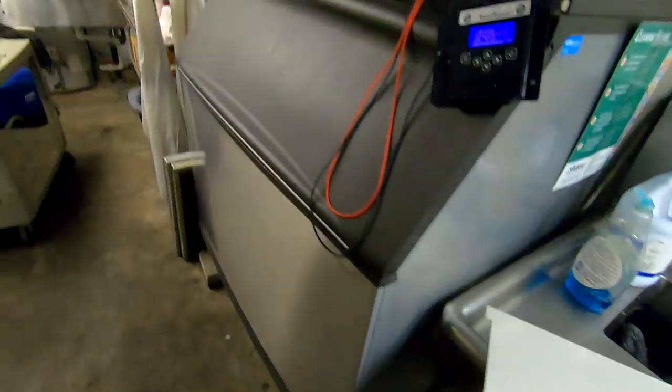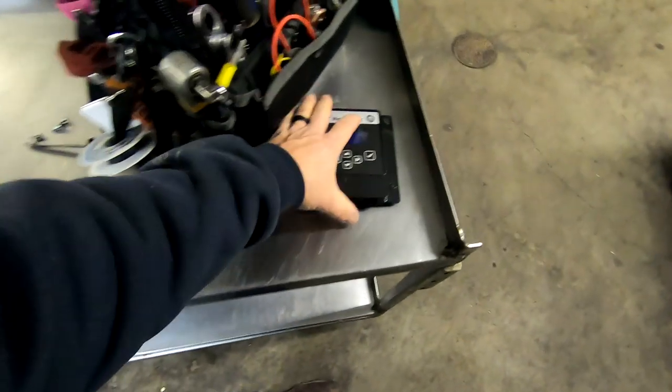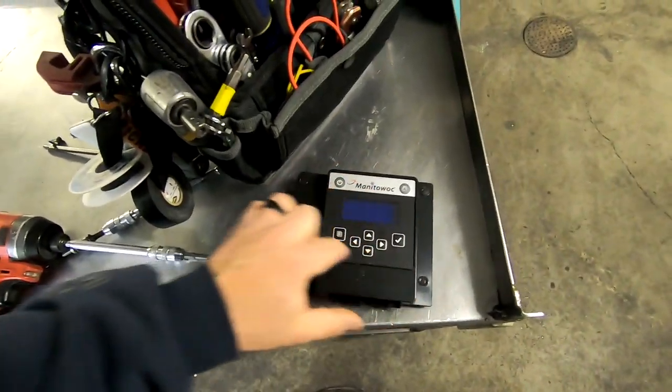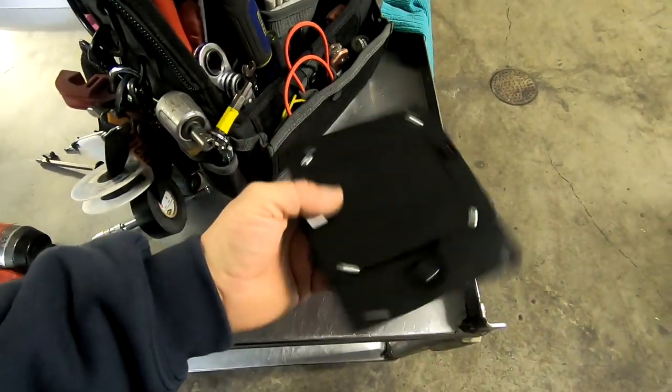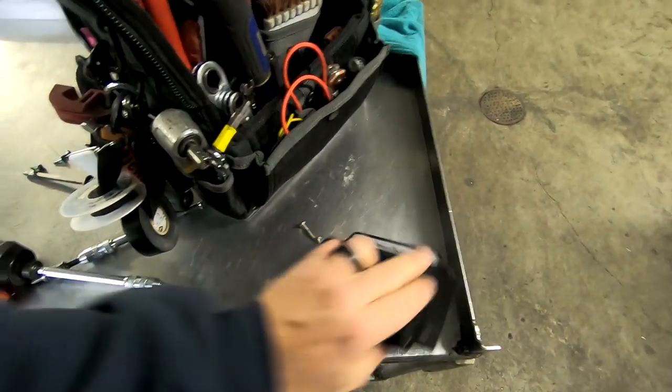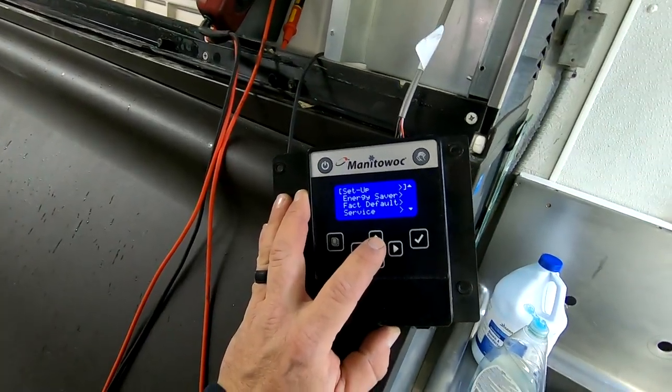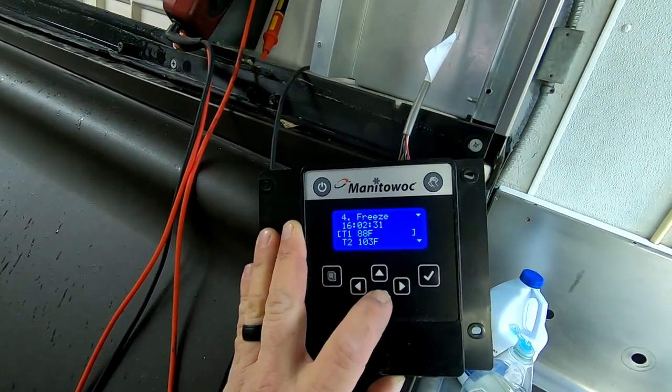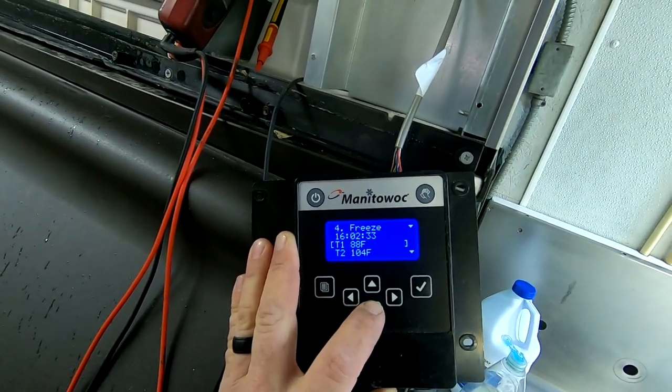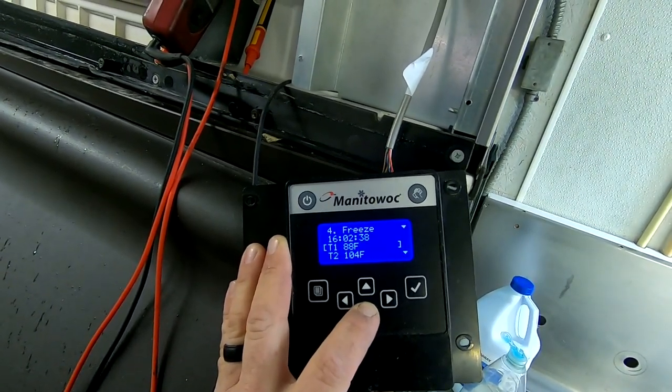Otherwise you might lose some of your water over the front. Likely what's going on with this is the keypad here is bad, and you can replace just the keypad and not the control board, which is a lot cheaper than a whole control board. So we'll order that. Let's see what our temperatures are doing, running about 102 discharge gas.